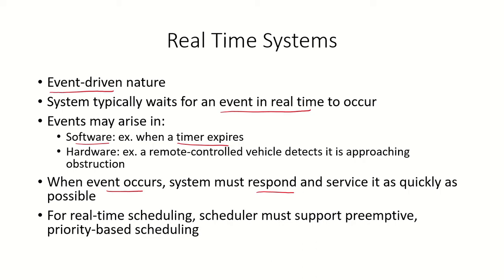For this to happen, the scheduler which will be scheduling these real-time events must support preemptive, priority-based scheduling. If the system is non-preemptive, it will not preempt a running process — that means it will not take away the CPU from a running process and give it to the real-time process. Since the real-time process is a priority process, it has to be serviced as quickly as possible, so the system must support priority-based scheduling.